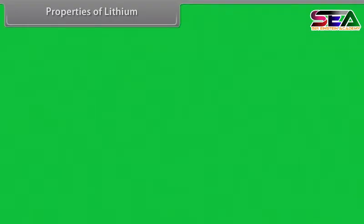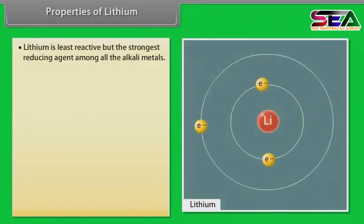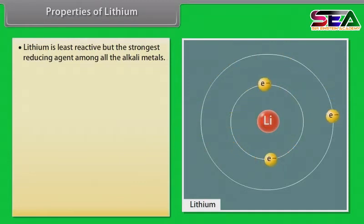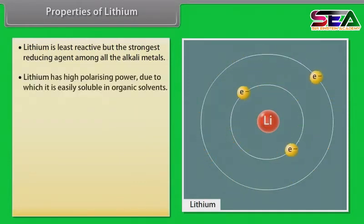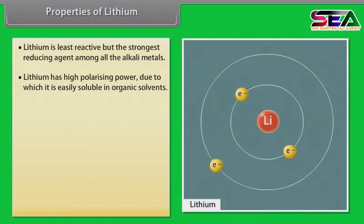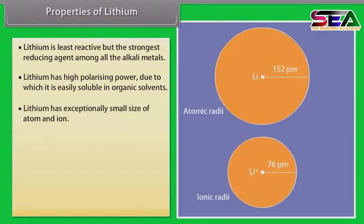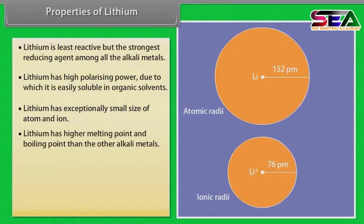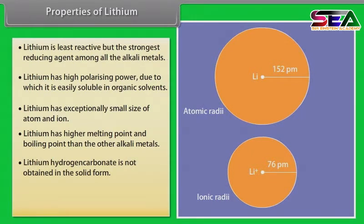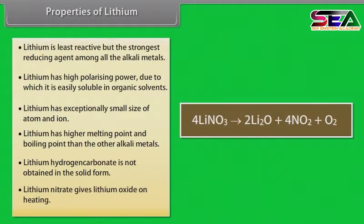Lithium is least reactive but the strongest reducing agent among all the alkali metals. It has high polarizing power, due to which it is easily soluble in organic solvents. Lithium has an exceptionally small size of atom and ion, and higher melting and boiling points than the other alkali metals. Lithium hydrogen carbonate is not obtained in solid form, and lithium nitrate gives lithium oxide on heating.